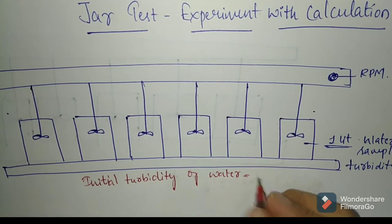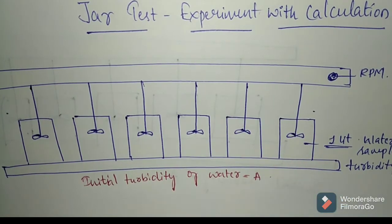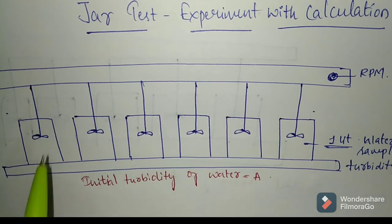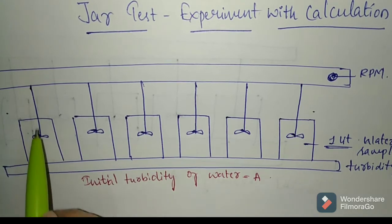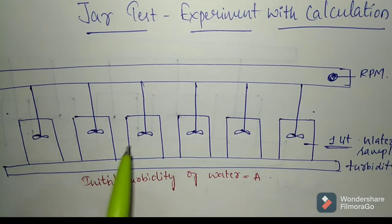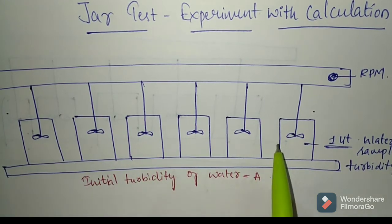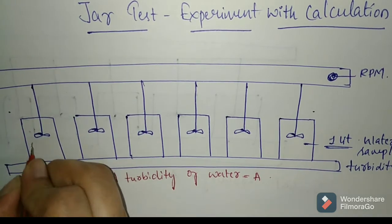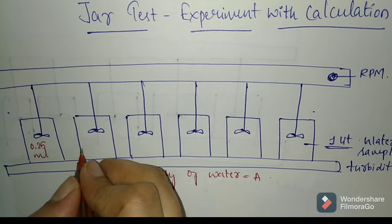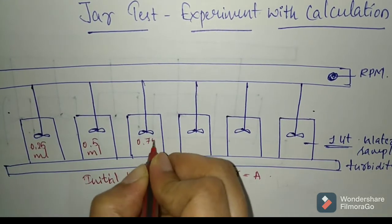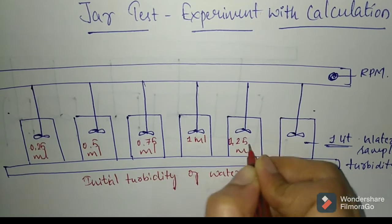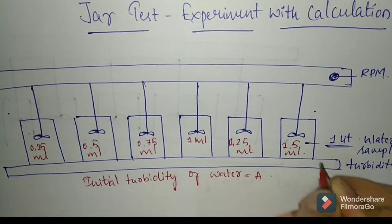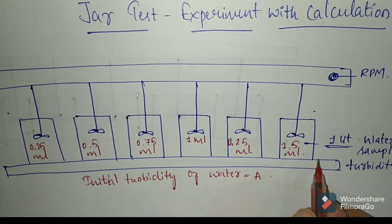The initial turbidity of the water which we are taking, let us call it as A. After keeping the jars in position and filling them with one liter of water, attach the sample jars to the stirring device by lifting the paddles upward. Then we will be adding the coagulant solution in progressive volumes: 0.25 ml, 0.5 ml, 0.75 ml, 1 ml, 1.25 ml, and lastly 1.5 ml in each of the six jars.